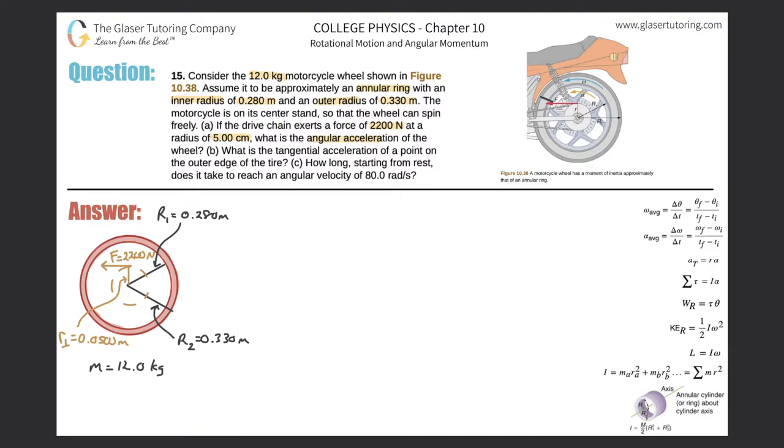Now, if you go in your text, because we're probably going to need the moment of inertia for an annular ring, page 359, you'll notice this particular picture and it says an annular cylinder or ring. So right here we have the moment of inertia for this particular rotating body. And if you notice, all we need is the mass and the inner and outer radius, which they did give us.